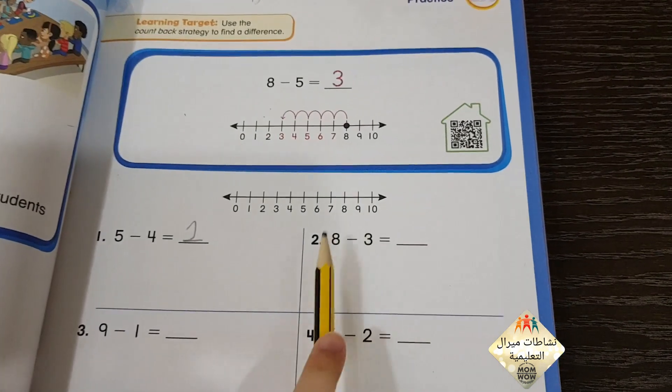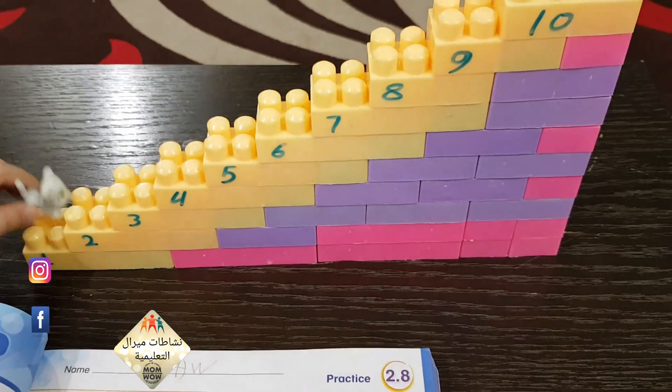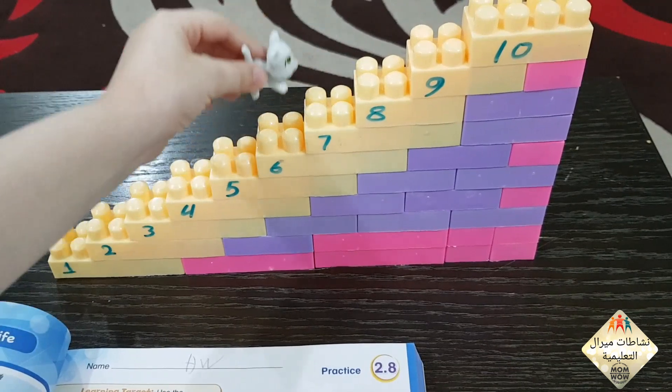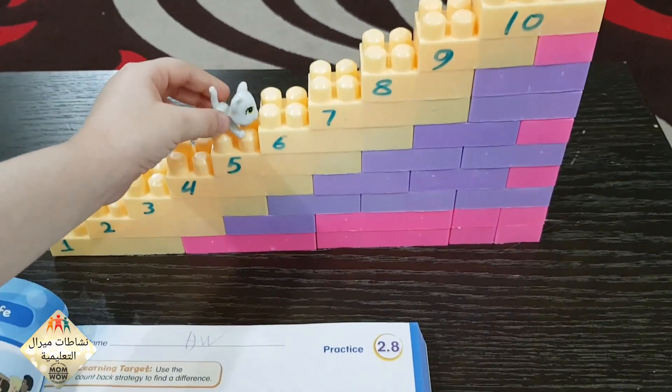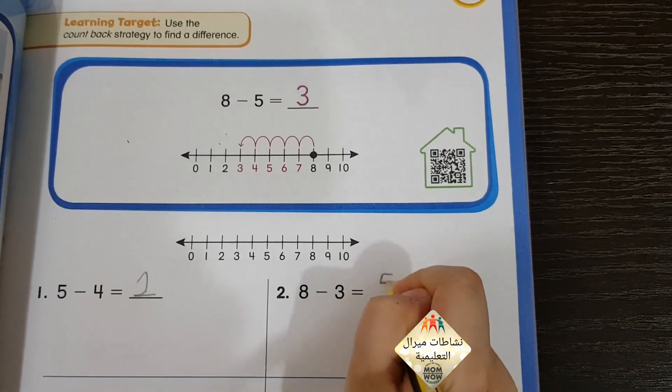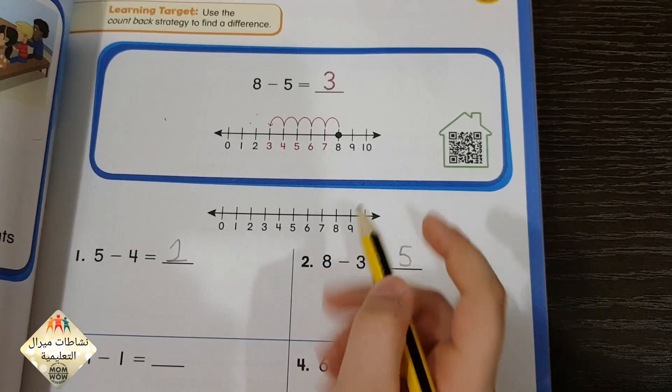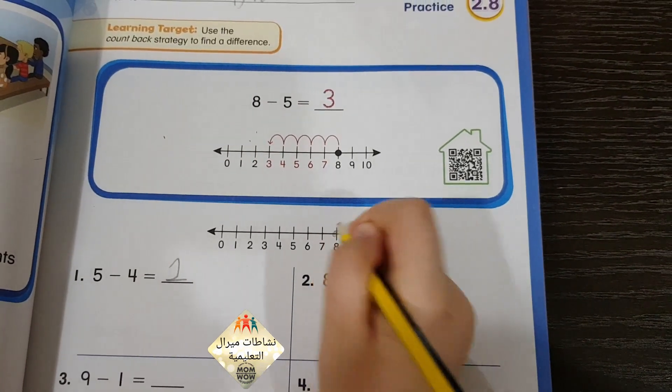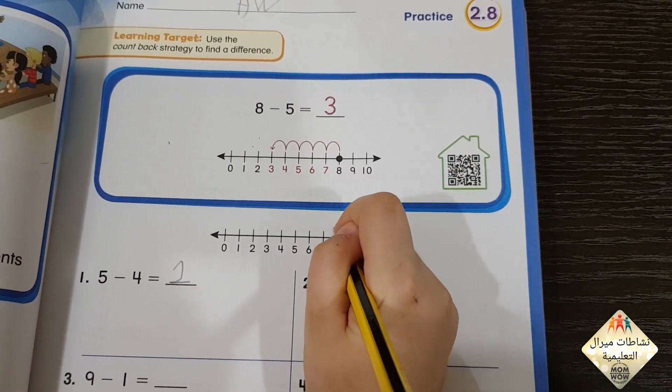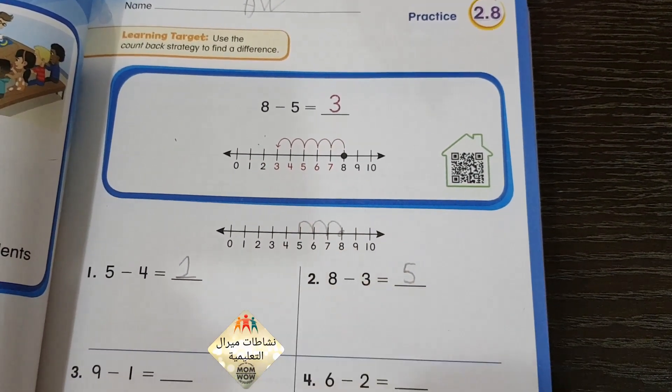Now 8 minus 3. 8 and minus 3: 1, 2, 3 equals 5. Now we will make a number line. We will stand on 8, and how many we will go? 8. 1, 2, 3. The answer is 5.